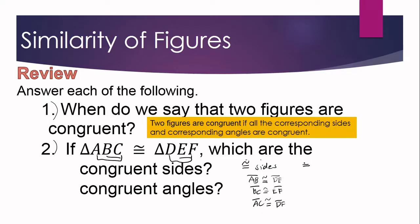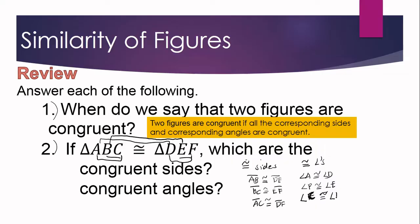In the same manner, the corresponding angles must be congruent since the triangles are congruent. The congruent angles in triangle ABC and triangle DEF are: angle A is congruent to angle D, angle B is congruent to angle E, and angle C is congruent to angle F.